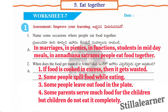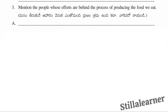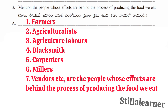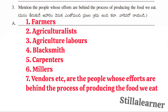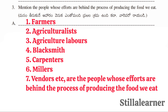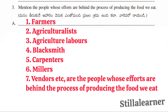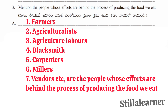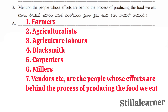Third question: mention the people whose efforts are behind the process of producing the food we eat. Answer: farmers, agricultural labourers, blacksmiths, carpenters, millers, and vendors. We should recognize how much effort it takes to grow food.